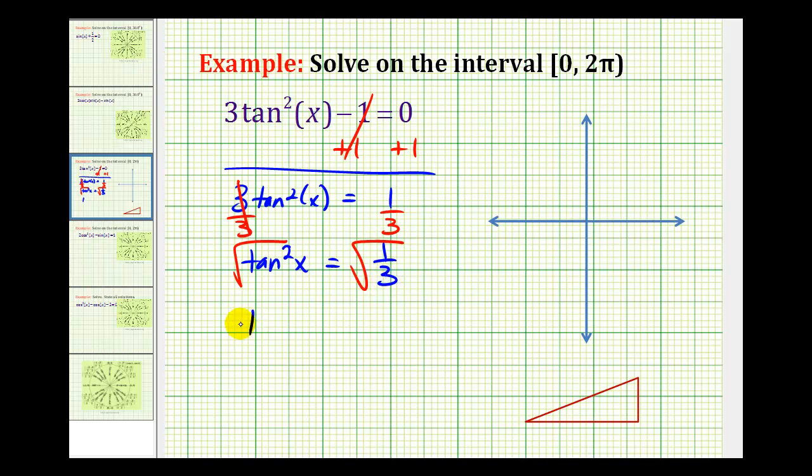We do have to be a little bit careful here. We're going to have tangent x equals plus or minus. This is the same as the square root of 1 over the square root of 3.